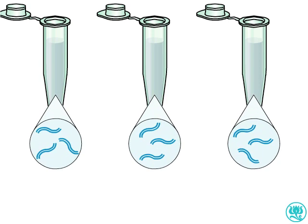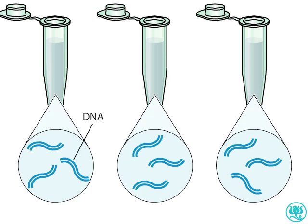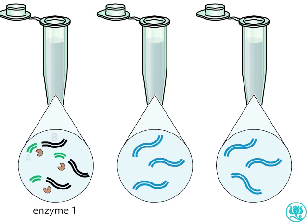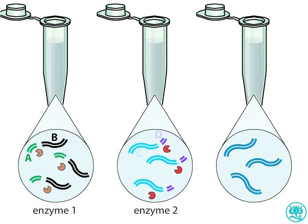These tubes contain identical DNA fragments, but they will be cleaved with different restriction enzymes to yield fragments of different sizes. Enzyme 1 cuts the DNA into fragments A and B, which we color for tracking purposes. Enzyme 2 cleaves the DNA at a different recognition sequence, yielding fragments C and D.